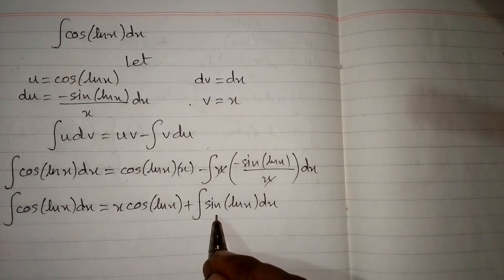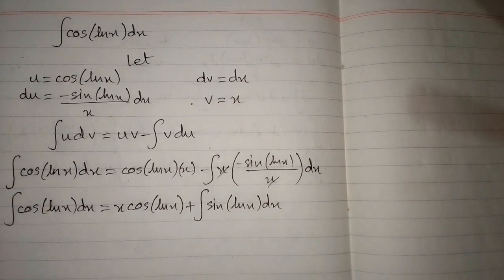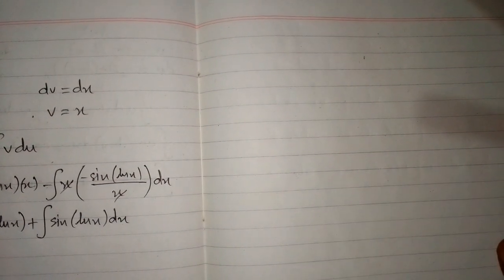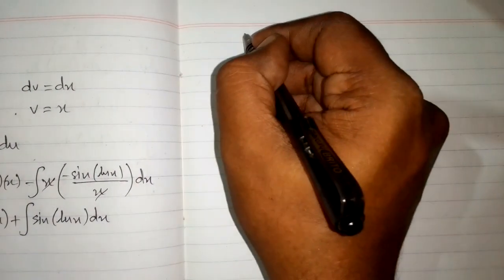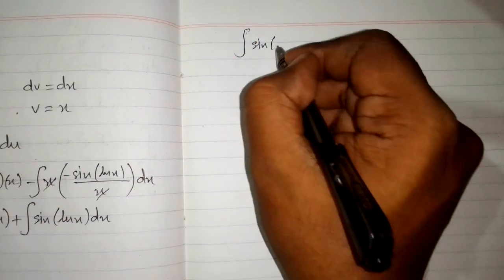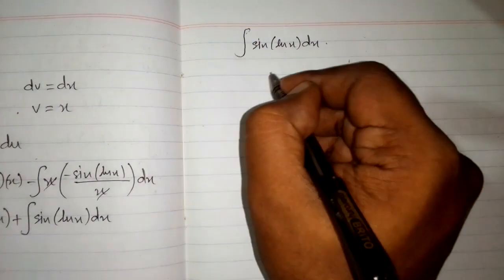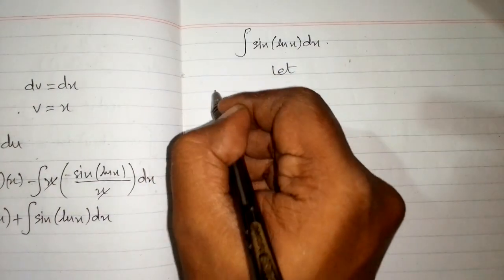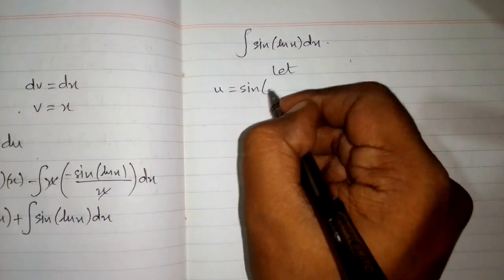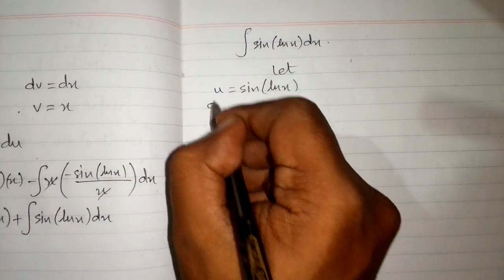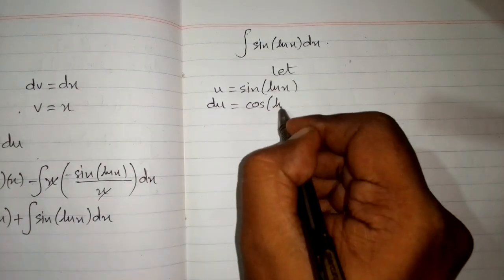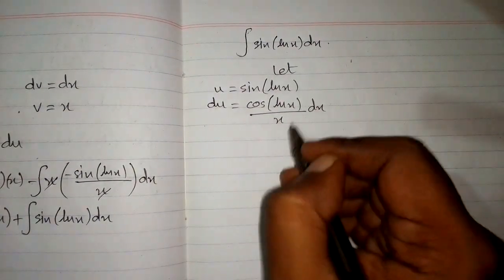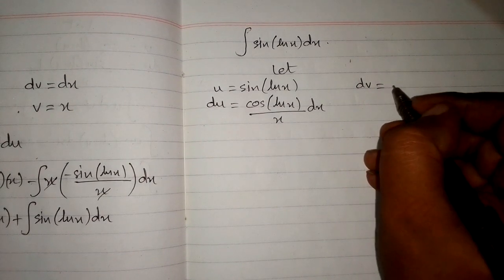Now we have the integral of sine of ln of x, so we integrate it separately using integration by parts again. Let u equal sine of ln of x, so du equals the derivative of sine of ln of x, which is cosine of ln of x upon x, multiplied by dx. And dv equals dx.